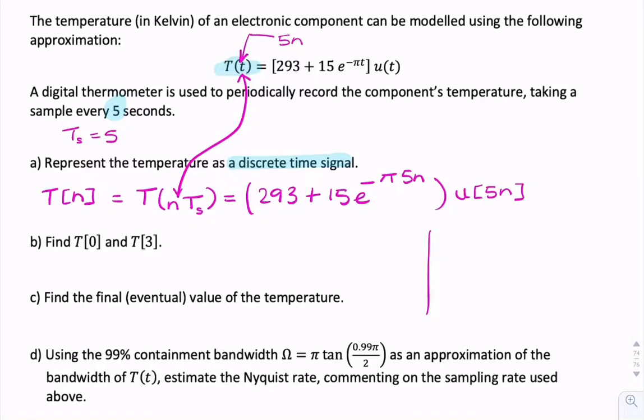Now, unit step, if you scale a unit step, nothing happens. It remains a unit step. So u of 5n is just u of n. So we can just write that as u of n. So that's part A. This is now a discrete time signal.